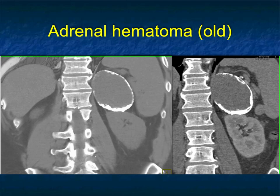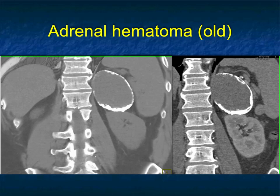Sometimes hematomas, when they're older, calcify — like this case of a left adrenal hematoma. That makes it very easy. Coarse calcifications, whether in the liver, spleen, kidney, or adrenal, typically means it's an old hematoma. I've also seen hematomas where the adrenal shape is maintained and the adrenal is calcified. Those are not the ones that are problematic — it's the solid mass with no sign of bleeding and concern for malignancy that is the real challenge.